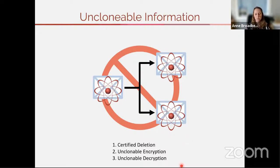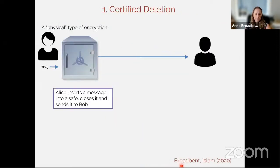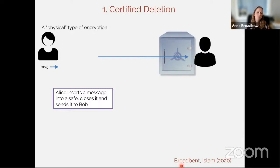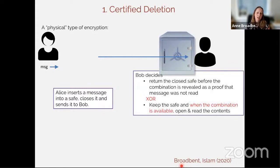We'll look at three embodiments of unclonable information, focusing mostly on the first two: certified deletion, unclonable encryption, and unclonable decryption. I want to start with certified deletion because it has a really nice physical analogy. Certified deletion is a type of encryption where Alice takes a message, inserts it into a safe, closes it, and sends that safe to Bob.